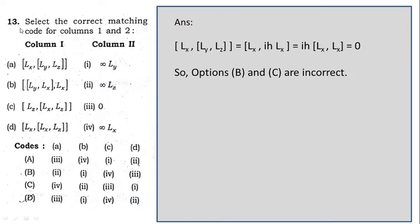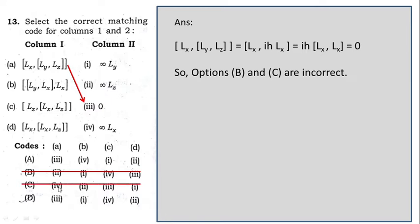Question number 13: we have to match column 1 and column 2. In such problems, find the wrong answers to eliminate options. For entry A, the commutator [L_x, [L_y, L_z]]: since y and z are in cyclic order, this gives iℏ·[L_x, L_x] which is zero — so A connects with 3. Options B and C have A connecting with 2 or 4, which are wrong. So option A or D may be correct.